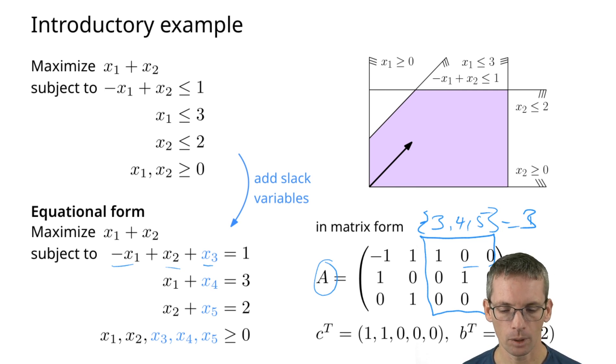Because we here also have positive values, whenever we would set x1 and x2 to zero, then it simply says x3 is 1, x4 is 3, x5 is 2. So this here gives me a basic feasible solution.